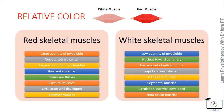There are large amounts of mitochondria present in red skeletal muscles, while the amount of mitochondria in white skeletal muscle is low. Red skeletal muscles are slow and sustained while white skeletal muscles are rapid and unsustained. Z lines are thicker in the red while they are thinner in the white skeletal muscle.